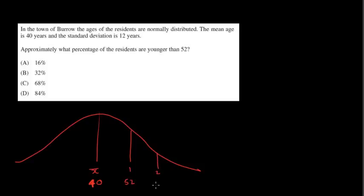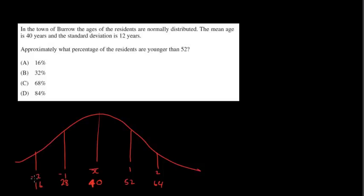Two standard deviations would be 12 more than that, so it'd be 64. And likewise, 12 underneath 40 — so 40 take away 12 would be 28, which is negative one standard deviation. Take 12 away again, we get 16, which would be negative two standard deviations, and obviously the rest would follow as well.